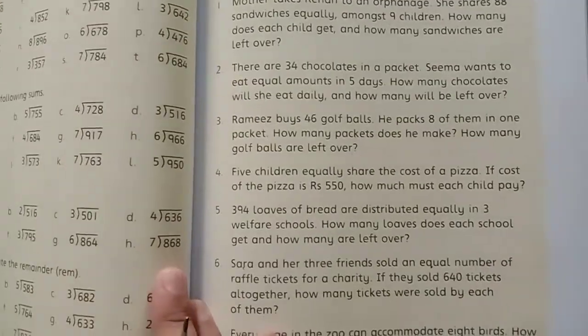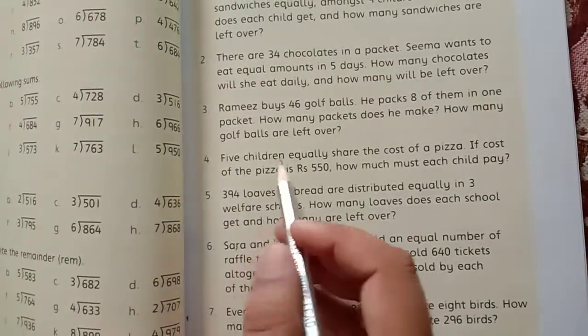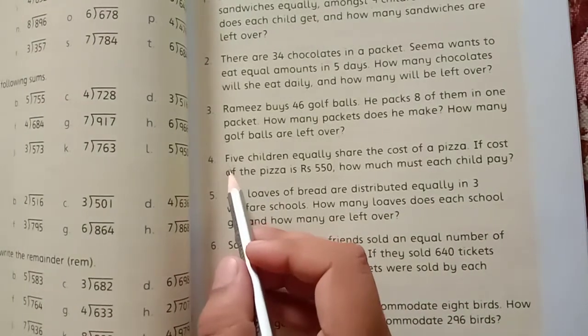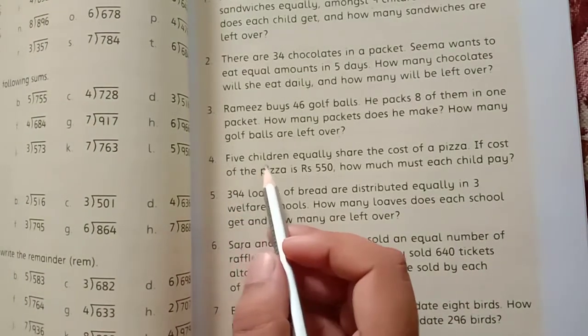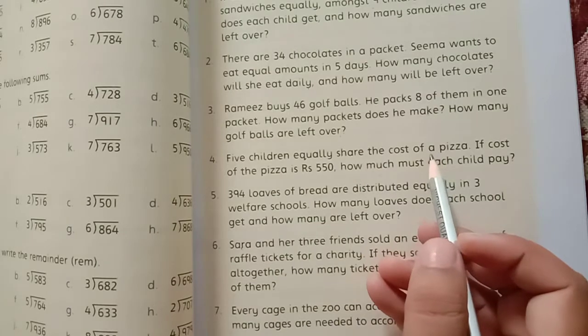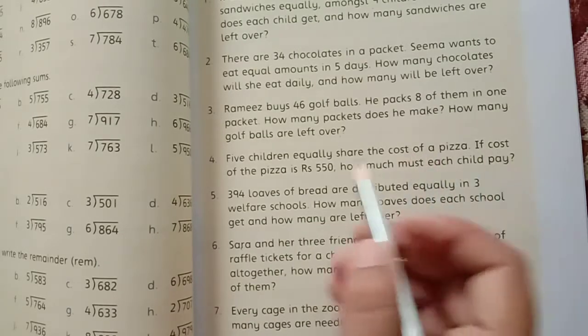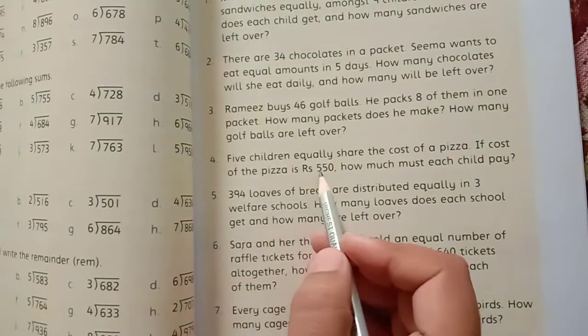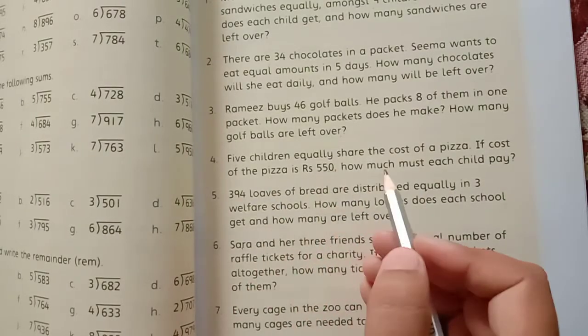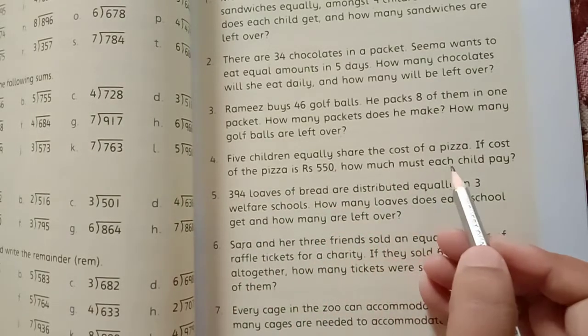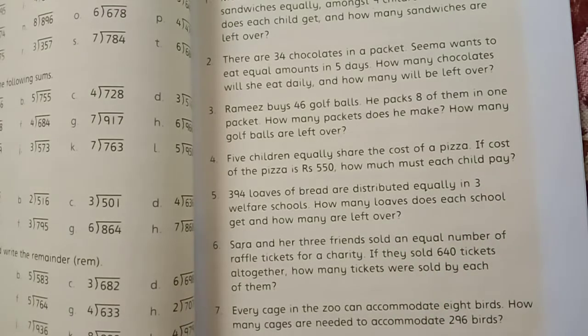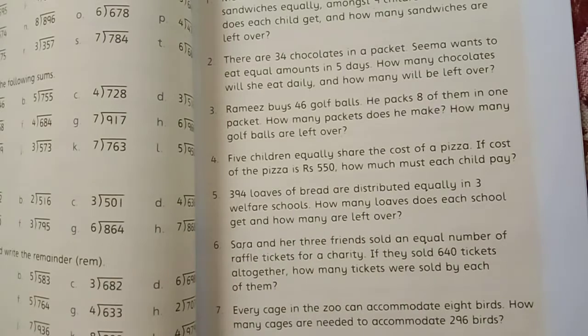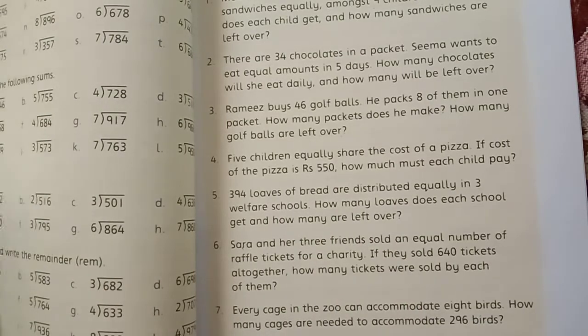There is question number 4. Question number 4 is five children equally shared the cost of pizza. If the cost of the pizza is Rs. 550, how much should each child pay? 5 students, 550 divided by 5, we will find how much each child will pay.